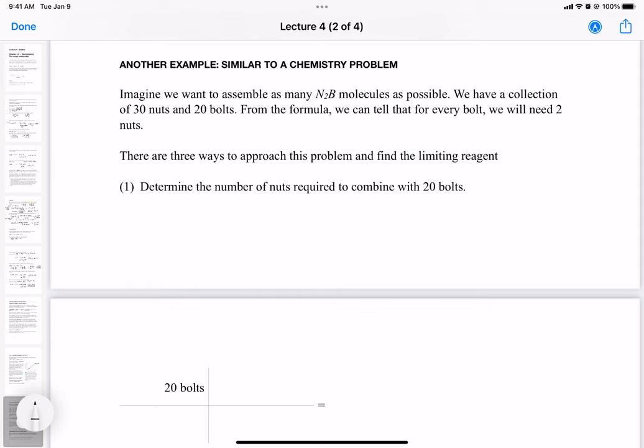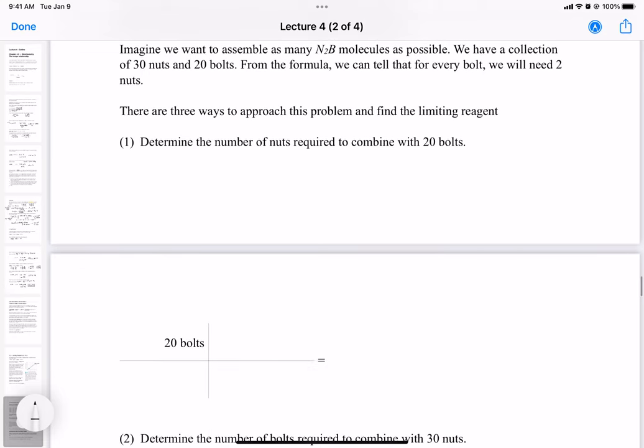All right, so imagine we want to assemble as many N2B molecules as possible. We have a collection of 30 nuts and 20 bolts. From the formula N2B, we can tell that for every bolt we need two nuts. So there are three ways to approach this problem and find the limiting reactant. So first, let's go over this one. Determine the number of nuts required to combine with 20 bolts.